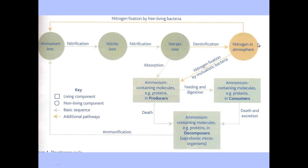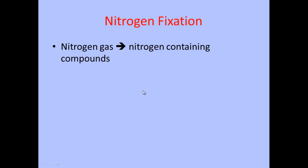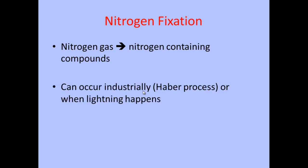We now have nitrogen in the atmosphere, and from this arrow you can see another process called nitrogen fixation by mutualistic bacteria. This takes nitrogen from the atmosphere and enables it to be absorbed into plants or producers. It takes nitrogen gas, N2, and converts it into nitrogen-containing compounds which the plant can use, as the plant itself cannot use atmospheric nitrogen directly. This can also be done industrially via the Haber process, or when lightning occurs, but the most important method for plants is carried out by bacteria.